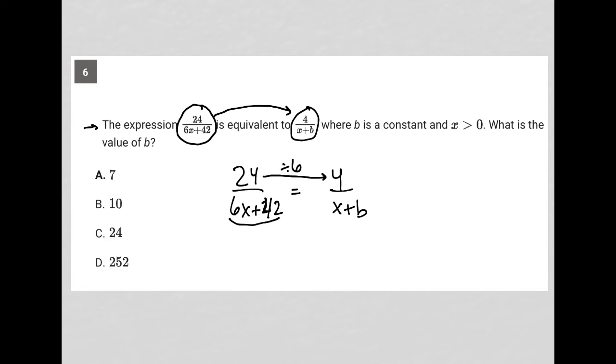How am I getting from 6x plus 42 to x plus b? Well, if these fractions truly are equal, then I would also need to divide by 6 on bottom as well, because that's the only way that they'd be equal, if I'm dividing by the same number in the numerator as I am in the denominator.